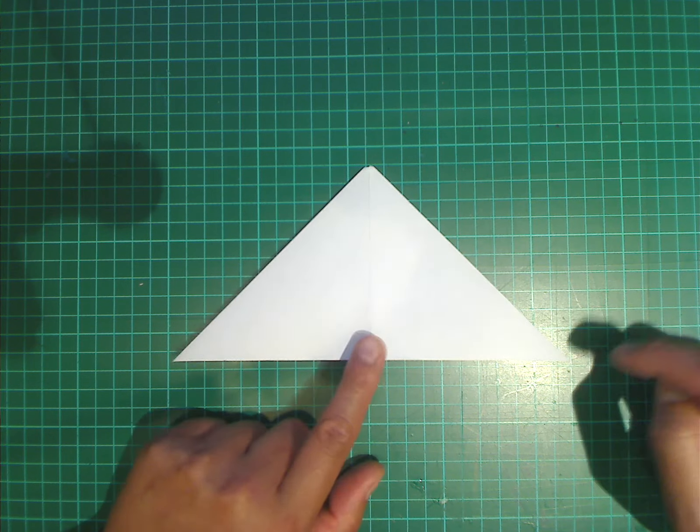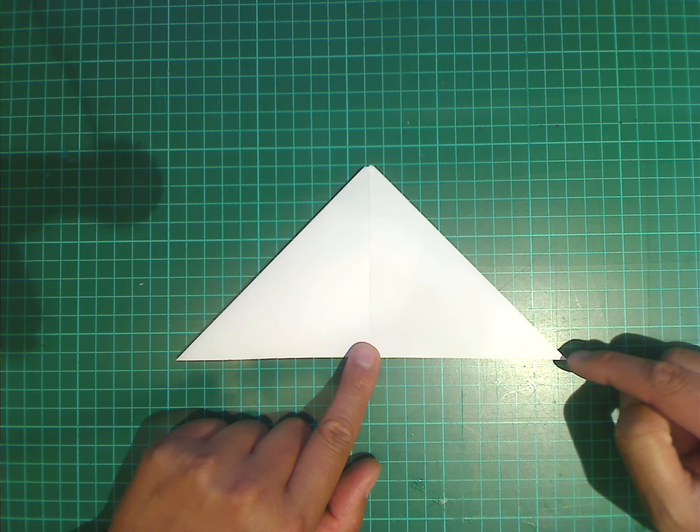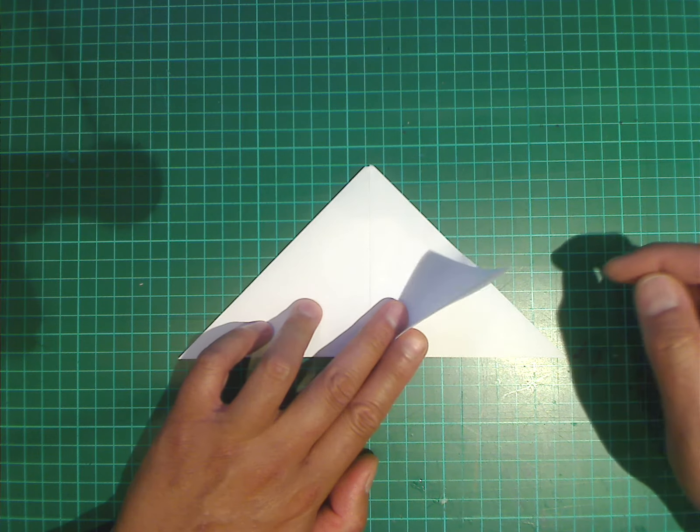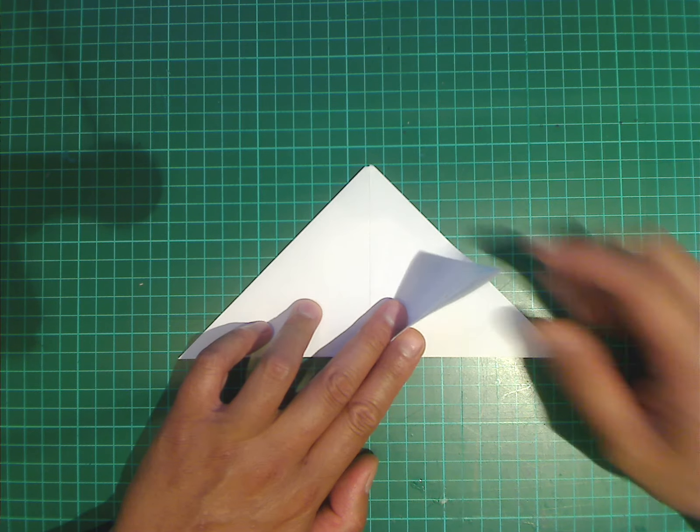What we're going to do is we're going to fold this right corner up to meet the middle point. And we're only folding the top layer. So this bottom layer remains there.